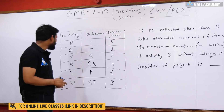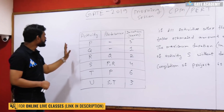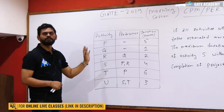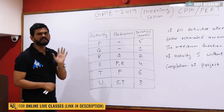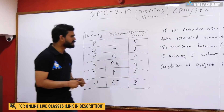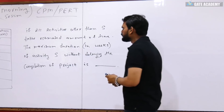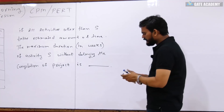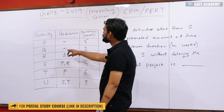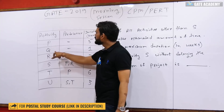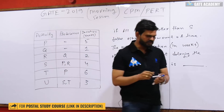Let's see what we will do here. We will make a network and draw it. What is the completion duration of the project — what is the minimum time for completion? As you can see, P and Q both have no predecessor, so both are independent.